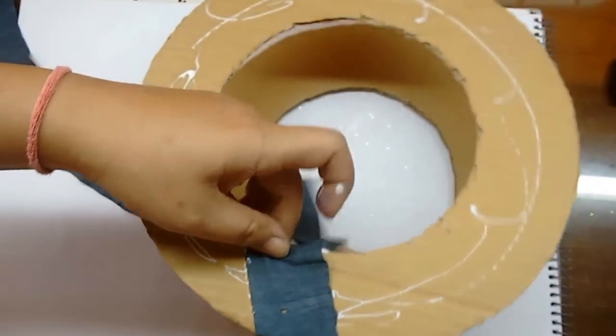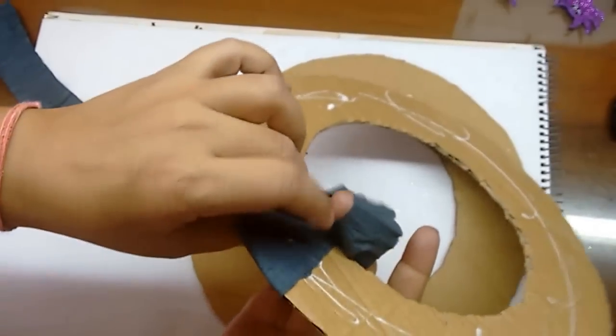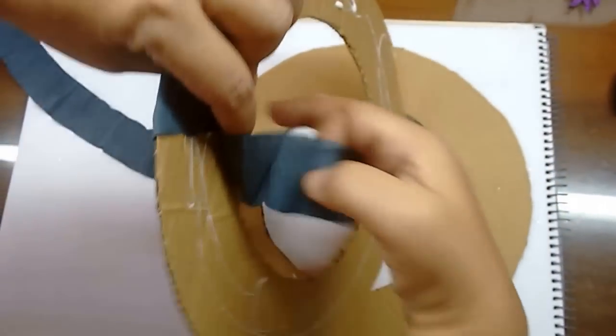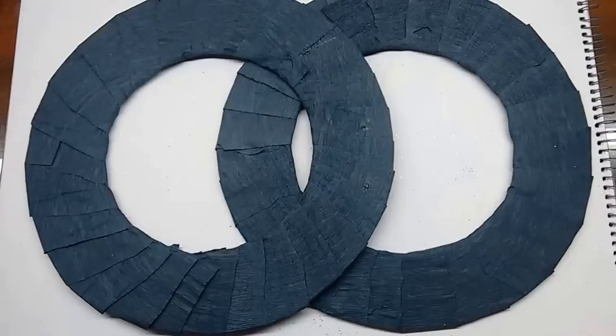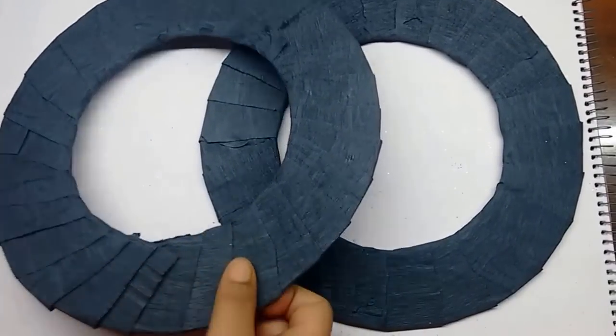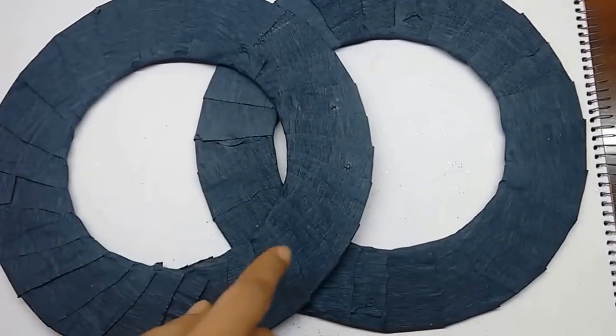And then wind this crepe paper on it. Start from the top. You can just wind it at random. It doesn't have to have any specific design or anything. Basically just cover the circle. Now I have covered both the circles with the crepe paper like this.